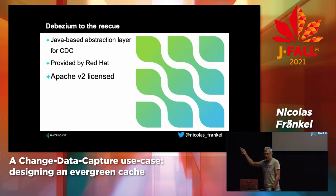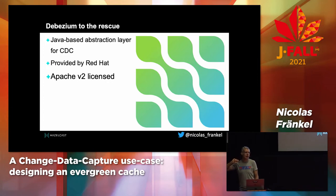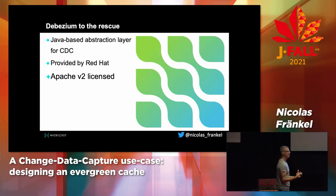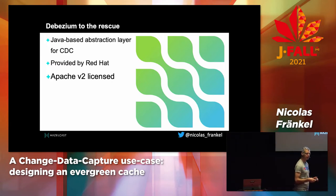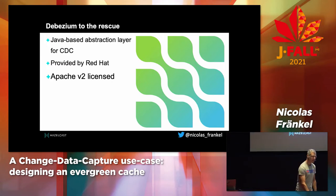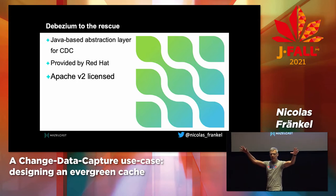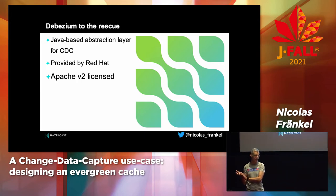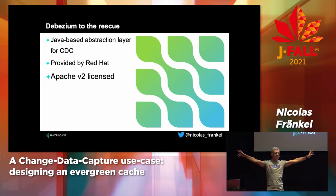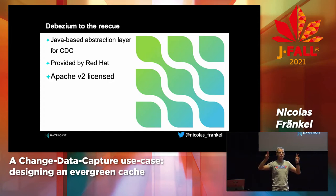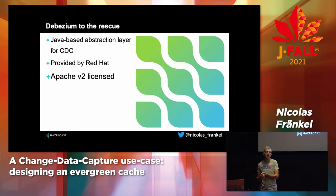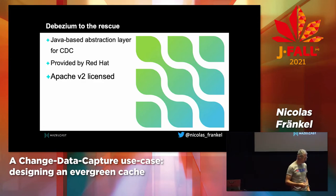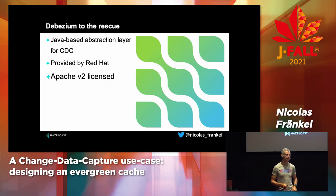Now comes the savior: Debezium. Debezium is actually a Java library that does it for us — it's an abstraction layer. Just as JDBC is an abstraction layer where you have an API and swap the driver, Debezium is an abstraction layer that gives you a single API across a limited set of databases. And as for whether it's maintained — Red Hat is behind it, which is much better.